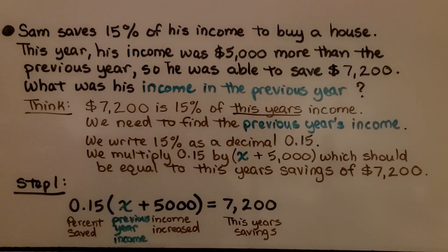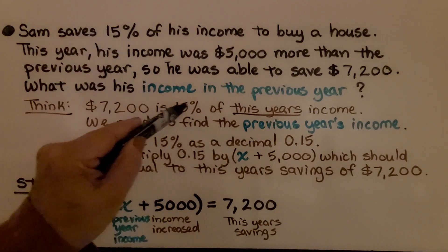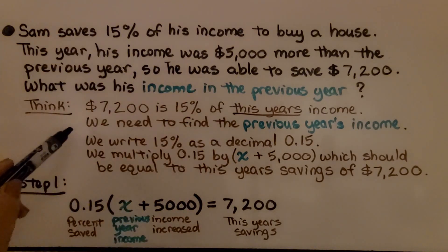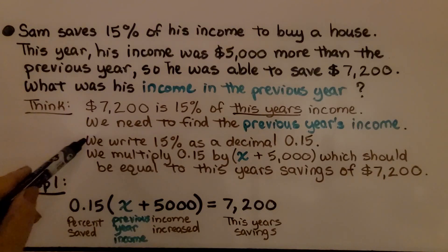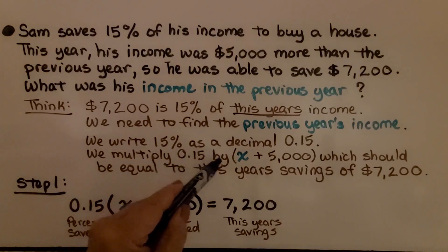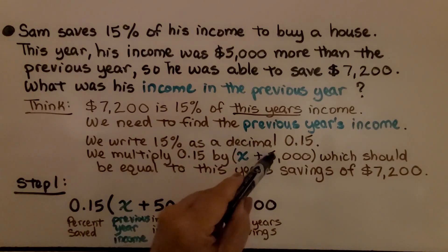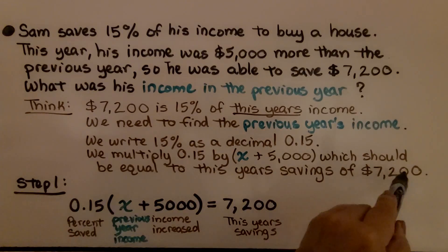Sam saves 15% of his income to buy a house. This year, his income was $5,000 more than the previous year, so he was able to save $7,200. What was his income in the previous year? We have $7,200 that he saved this year and it's 15% of this year's income. We need to find the previous year's income.